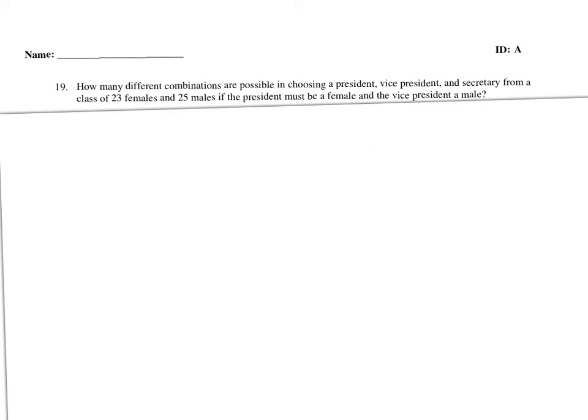Next, how many different combinations are possible in choosing a president, vice president, and secretary from a class of 23 females and 25 males, if the president must be female and the vice president must be male? Using the fundamental counting theorem: president has 23 options, vice president has 25 options, and secretary can be anyone — total is 48, minus the 2 already chosen, so 46 options. Multiply those together.